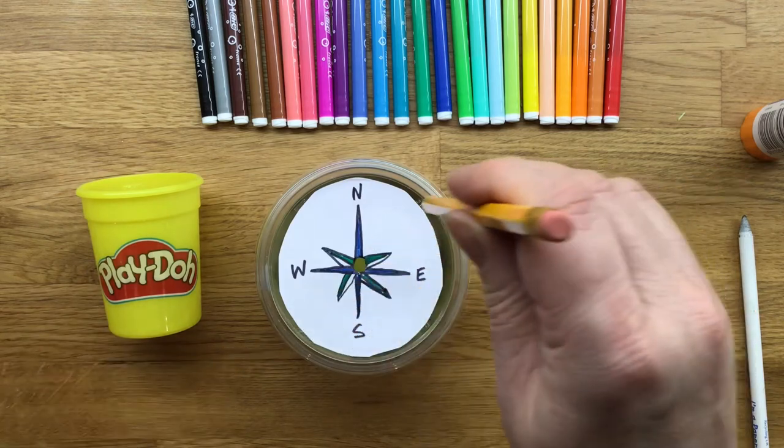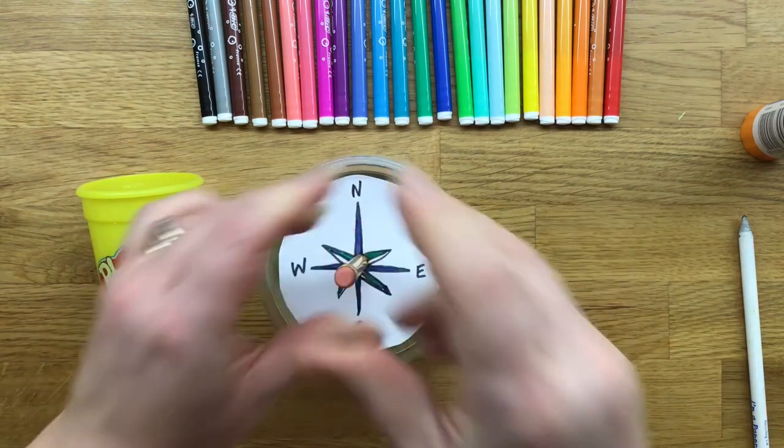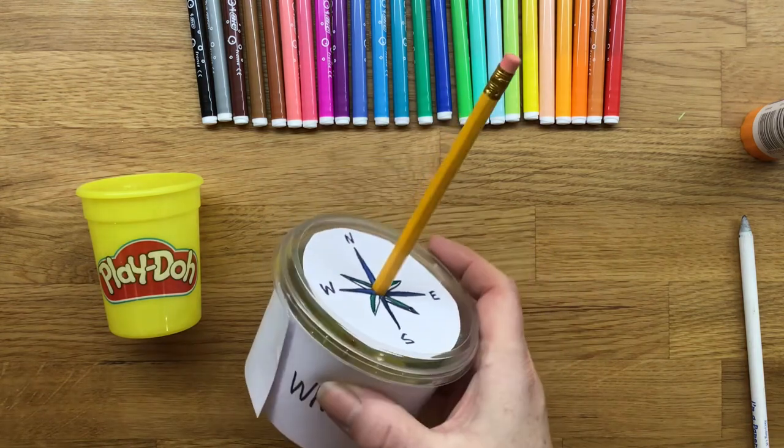Once you've secured the lid tightly onto your pot, push your pencil through the hole and push into the play-doh so it's nice and tight.